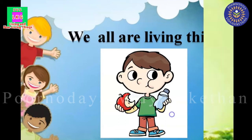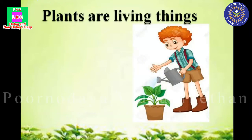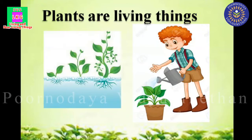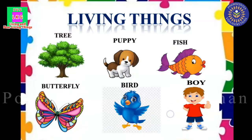Animals are also living things. So the first group — tree, fish, puppy, butterfly, bird, boy — all of them need food, water and air to live. They are called living things.